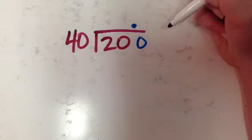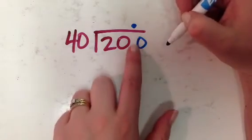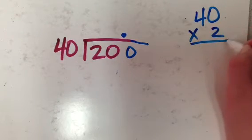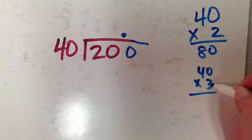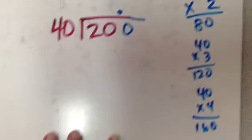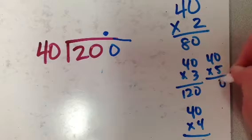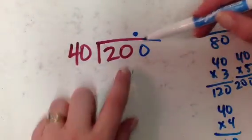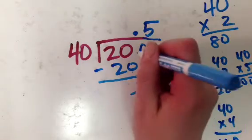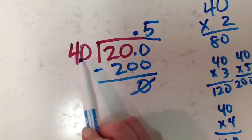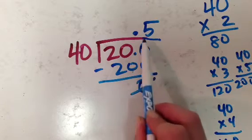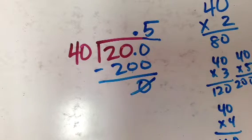40 into 200. Even though it started with a decimal point there, we're ignoring it, and we're just going to go into 200. How many times can 40 go into 200? 40 times 2 is 80. 40 times 3, 120. 40 times 4, 160. 40 times 5, there it is right there. So, 40 can go into 200 five times, which is 200. I can divide a bigger number into a smaller number simply by adding a decimal point and a zero, and as long as I bring the decimal point up, I'm going to treat this under the bracket like it was a whole number.